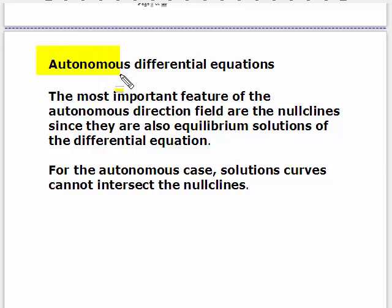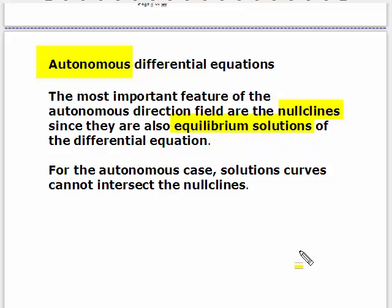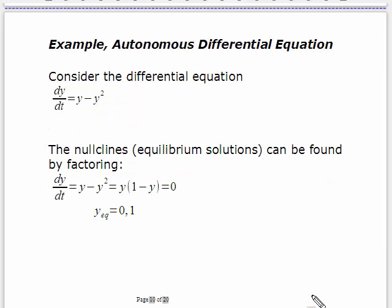For autonomous differential equations, there's another important feature of nullclines: the nullclines are solutions of the differential equation — specifically, they are the equilibrium solutions. From the uniqueness theorem, a solution curve cannot cross another solution curve. So no solution curves can cross these nullclines for autonomous differential equations.